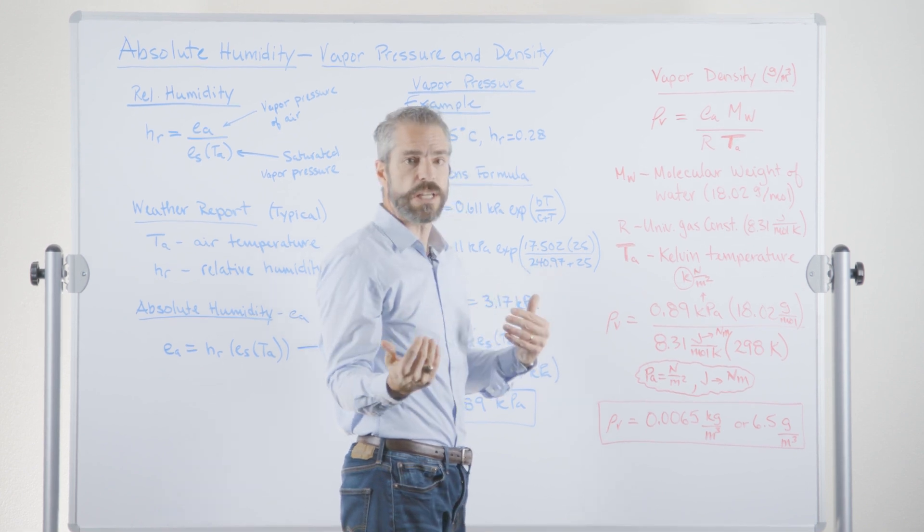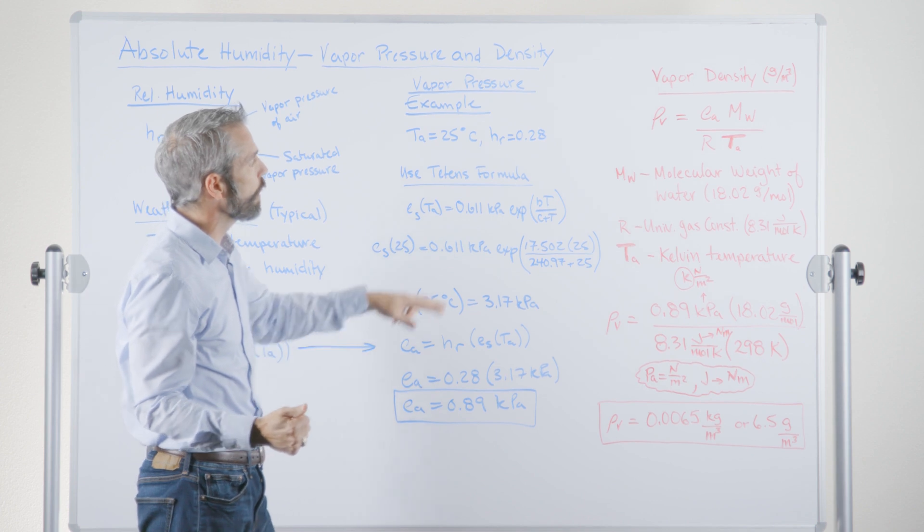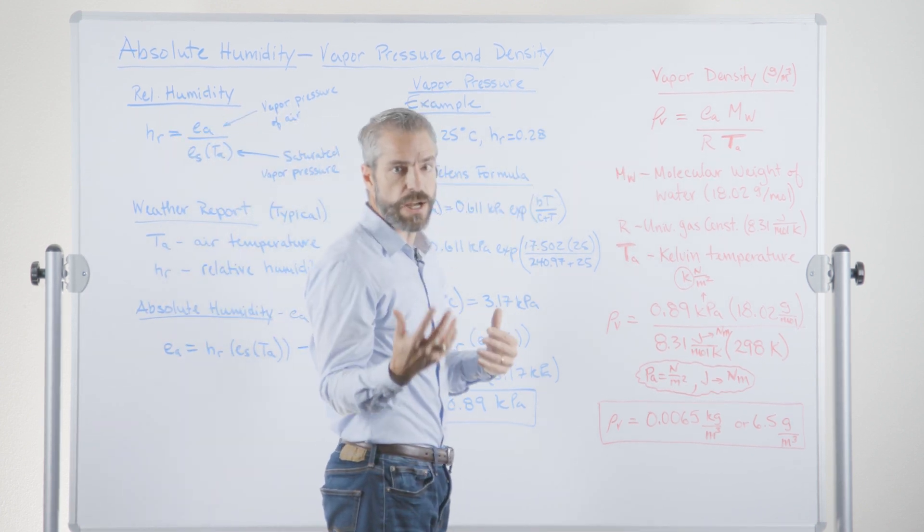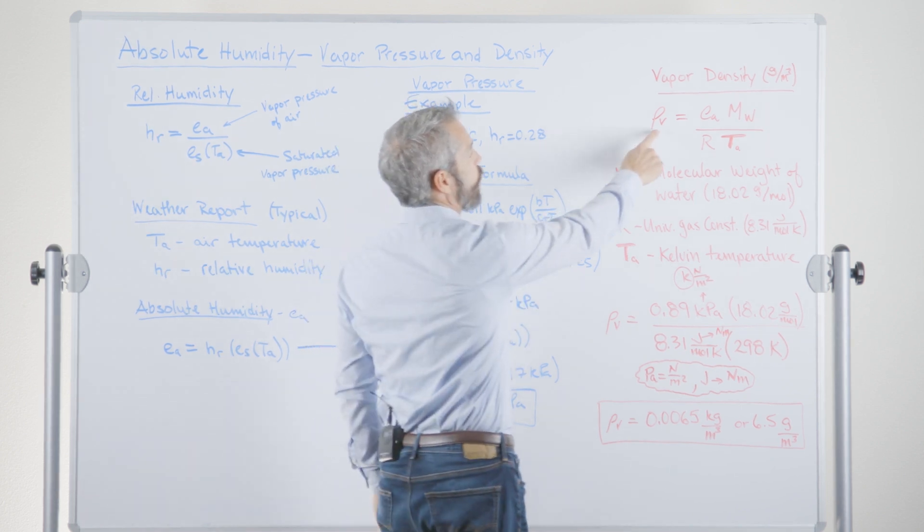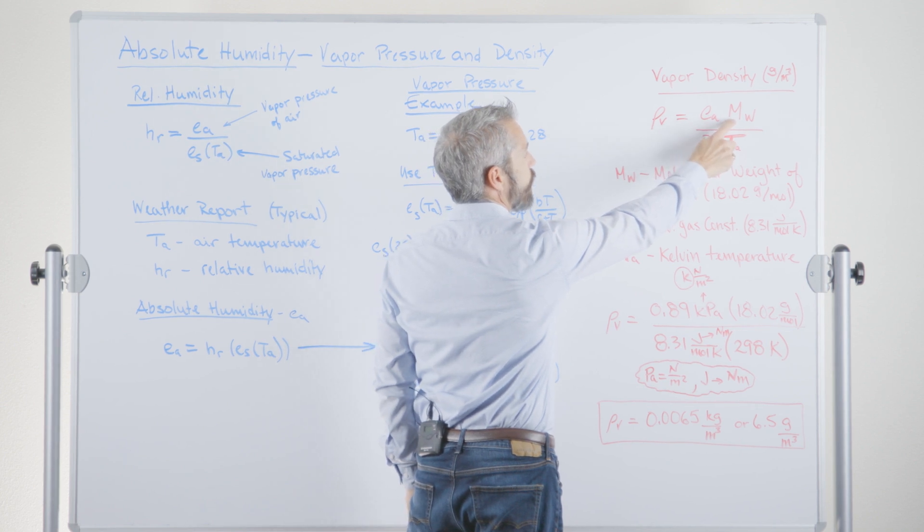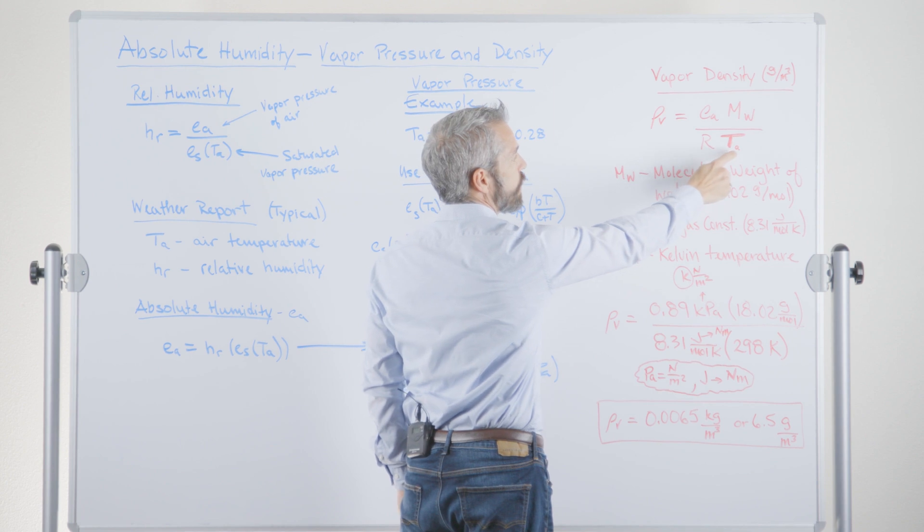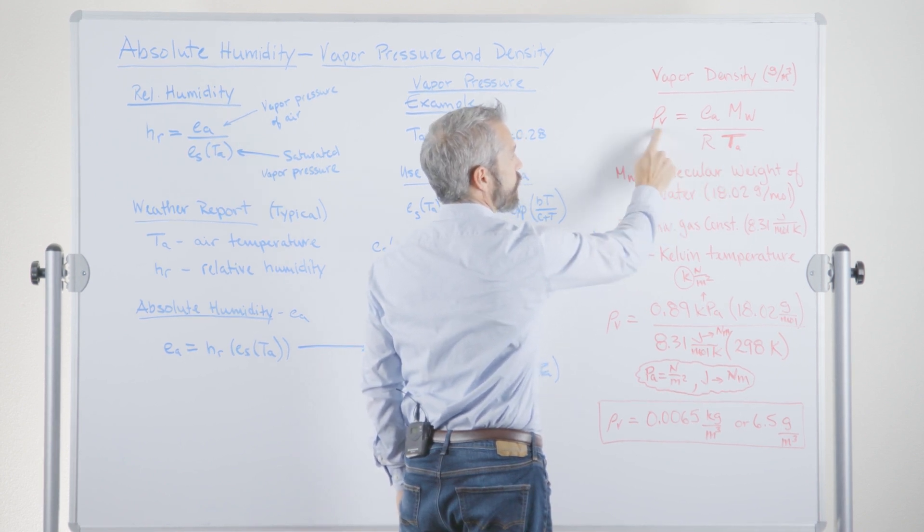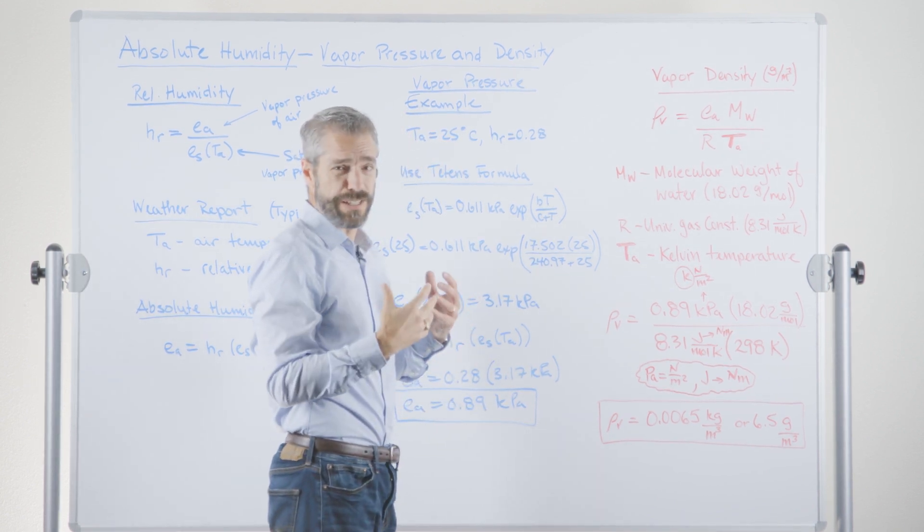So I want to know how do I get from a vapor pressure that I can easily calculate from a weather report, something like that, to a vapor density that would allow me to talk about actually how much water was in the air. This is our equation here. That says the vapor pressure times the molecular weight of water divided by the universal gas constant times the Kelvin temperature of the air will give us the vapor density.